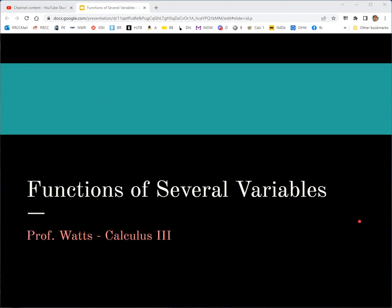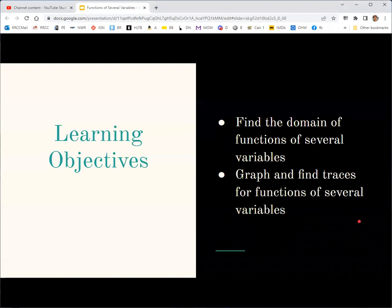This lecture goes along with section 4.1 of the OpenStacks textbook, Calculus Volume 3. We're going to try to find the domain of functions of several variables and graph them and find traces for them. We're really just looking at functions of two variables here, though some of this stuff can be easily extended to functions of three or more variables.